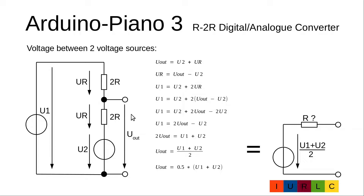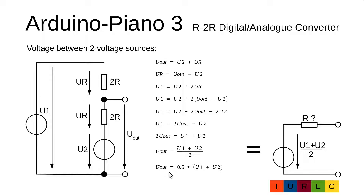We want to calculate the output voltage at the middle point of two resistors connected to two different voltage sources. Uout is U2 plus UR. This we can rearrange to: UR is Uout minus U2. U1 is U2 plus 2 times UR, giving Uout minus U2. We can rearrange this to: Uout is (U1 plus U2) divided by 2, or Uout = 0.5 times (U1 plus U2).